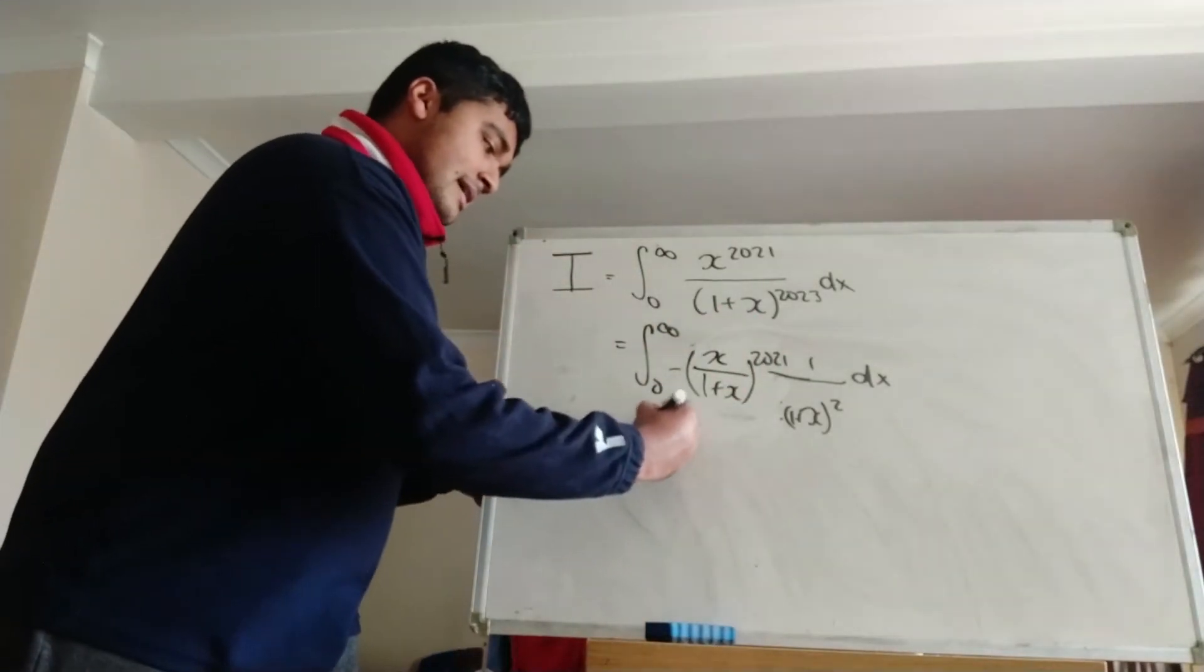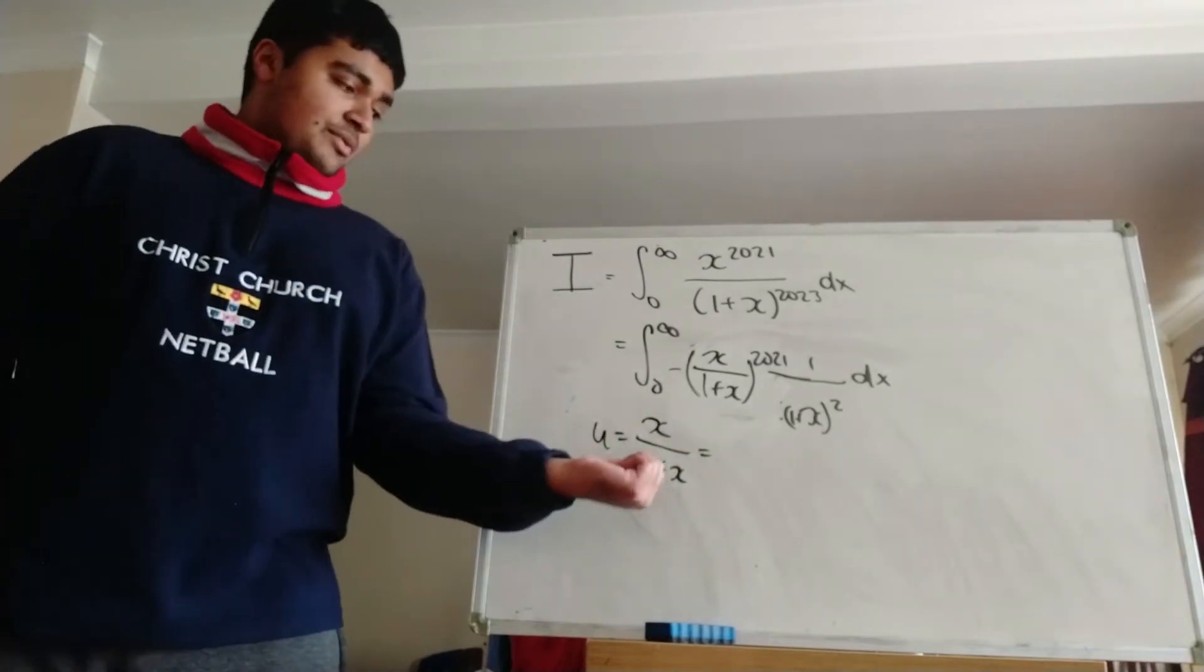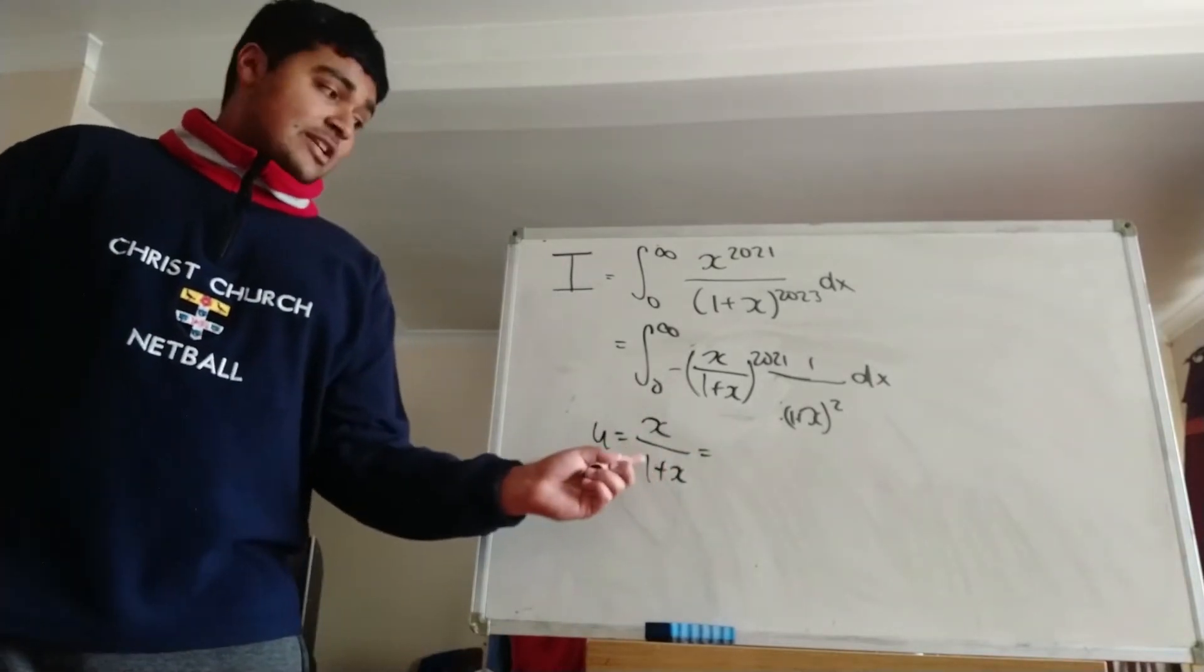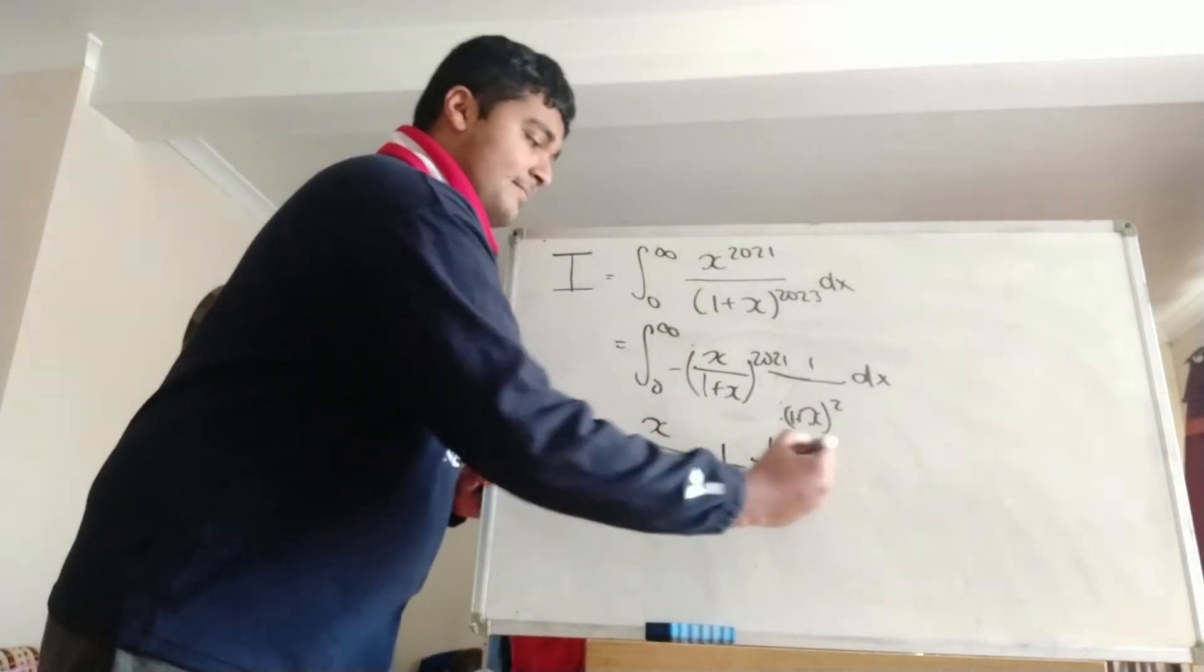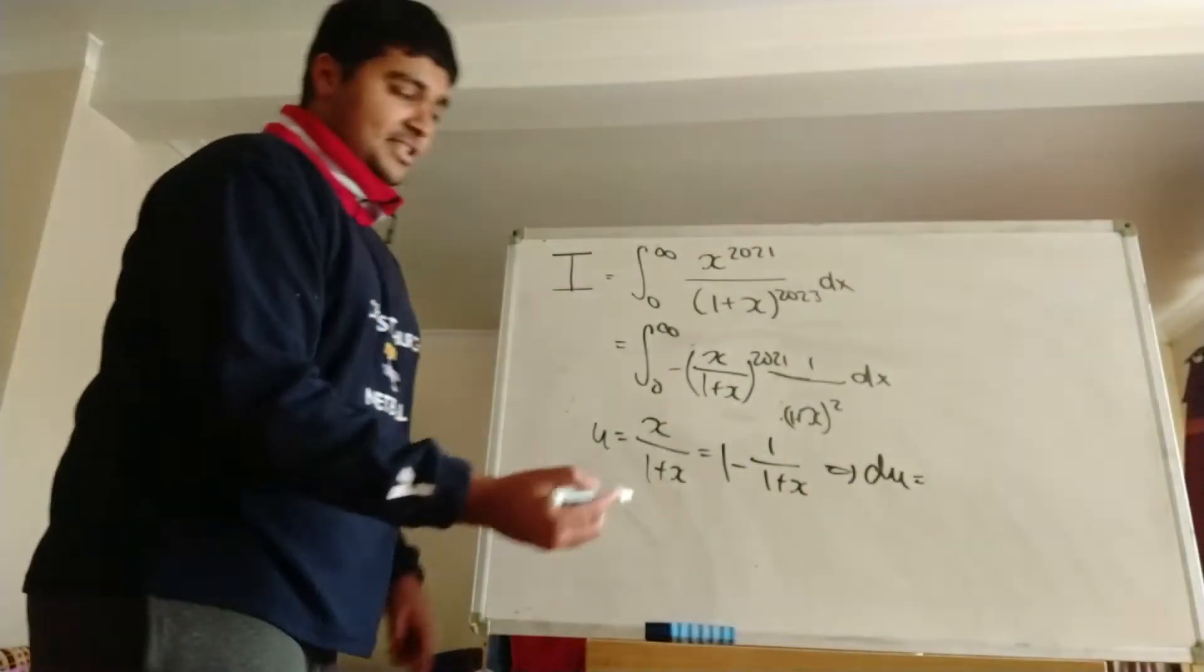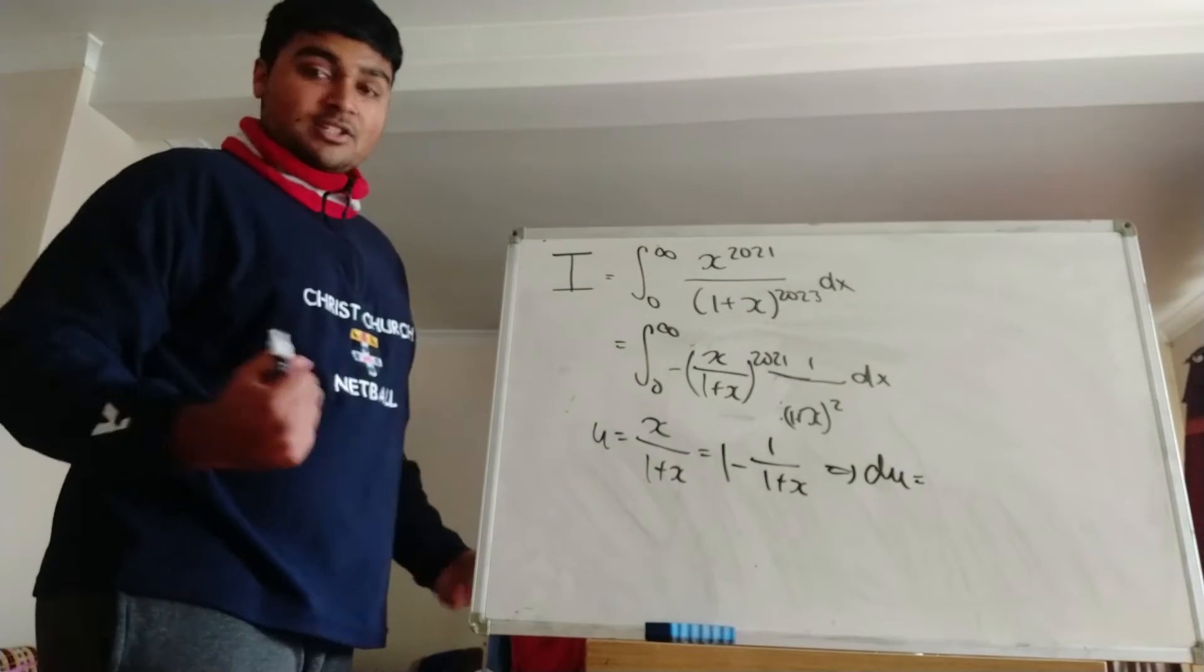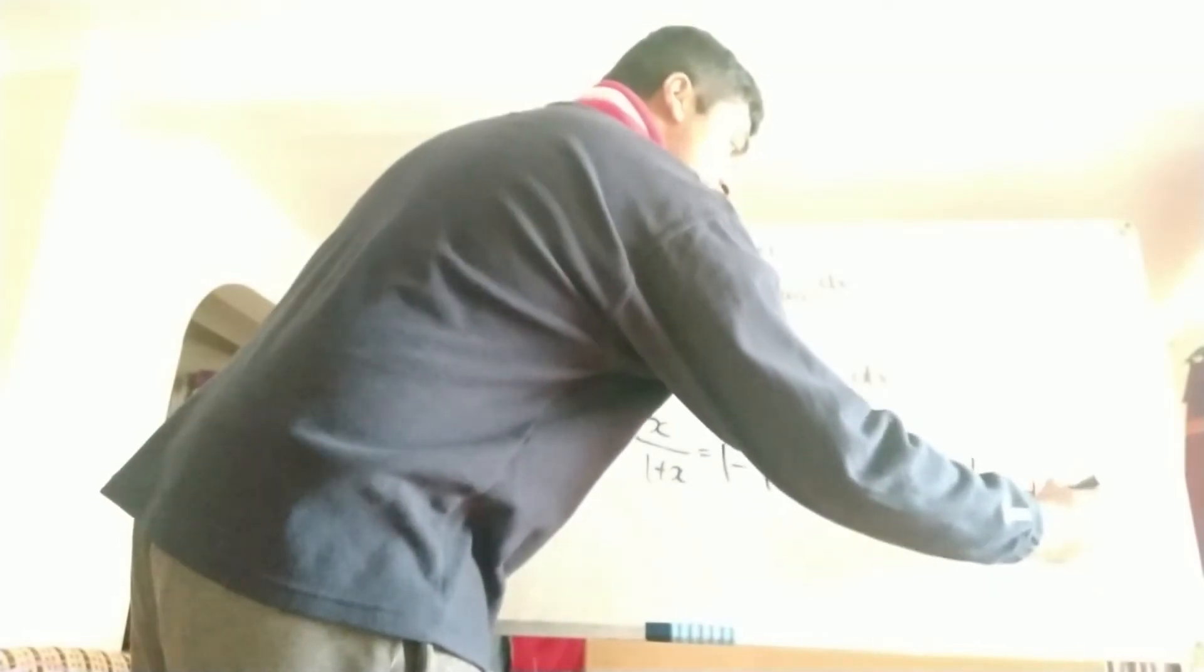So if we do u equals x over 1 plus x, then this thing here, well if we just add 1 and subtract 1 from the numerator here, we see that this is just 1 minus 1 over 1 plus x. So then if we just compute the derivative of u, du, this is just going to be equals, well the derivative of 1 is just 0, and the derivative of this guy here is just 1 over 1 plus x squared dx, like so.